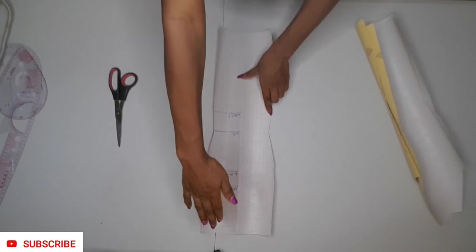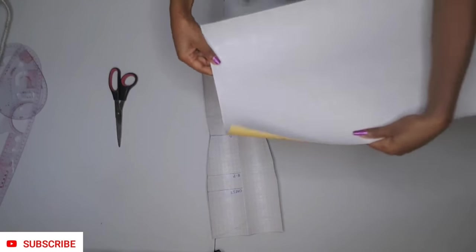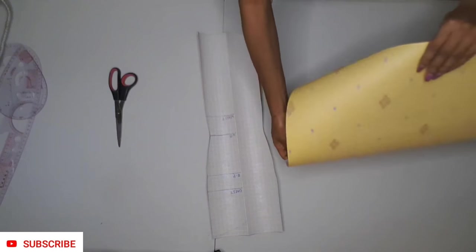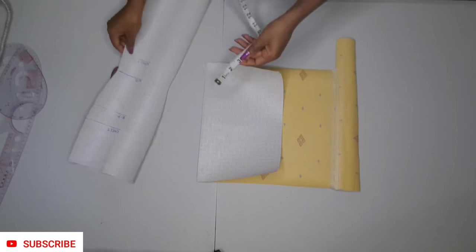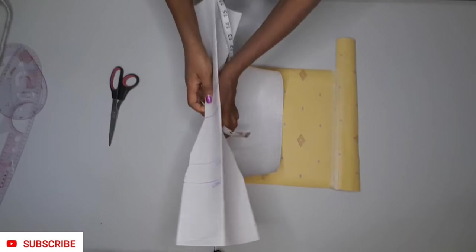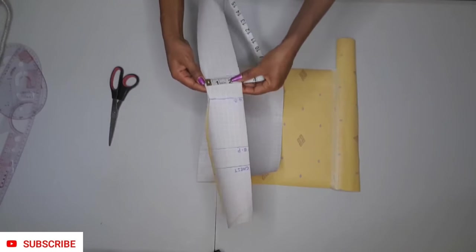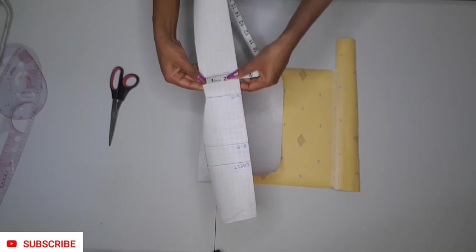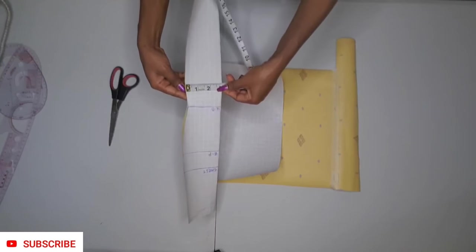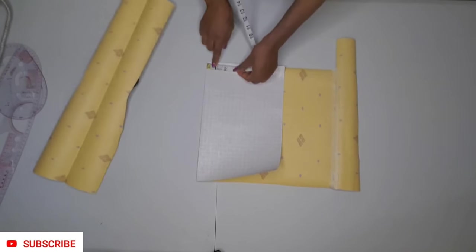Next, grab a new pattern paper and you are going to take the measurement of your waist on the center piece. Whatever your waist measures on this center piece, you are going to transfer it on the new pattern paper.